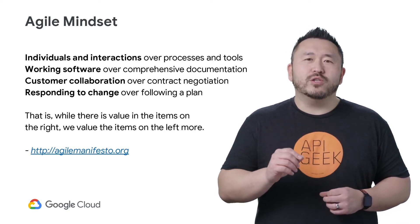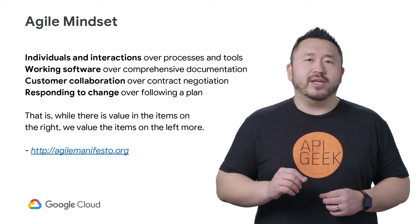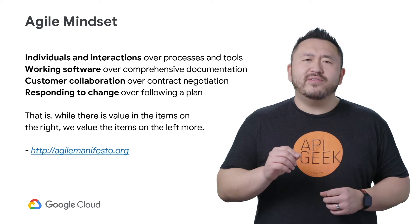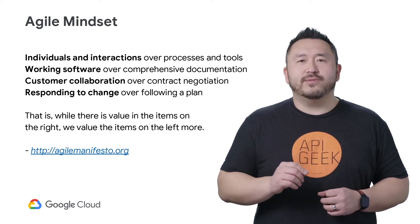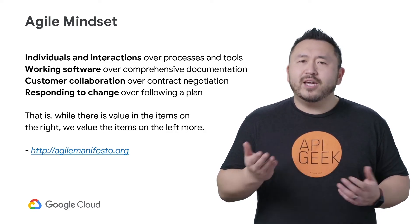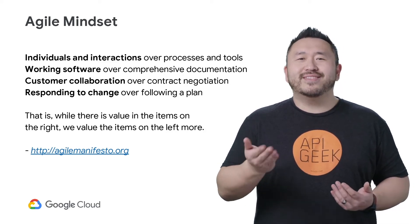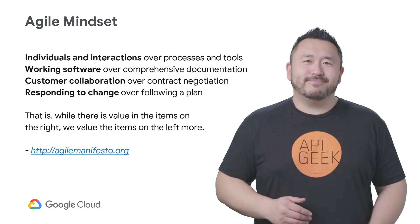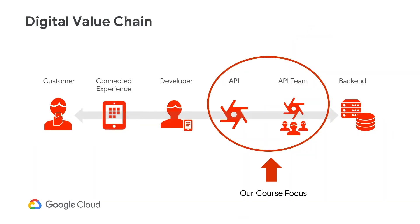The term agile was popularized by the manifesto for agile software development. Take a moment to read through it and visit their website. Agile can be adopted in many different software settings within the digital value chain. For our course, we focus on the agile method of developing APIs by the API team.